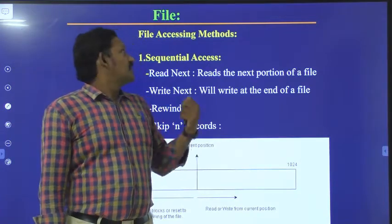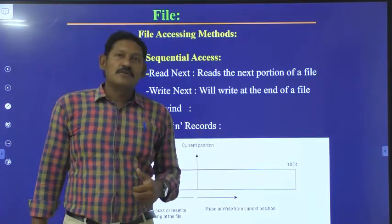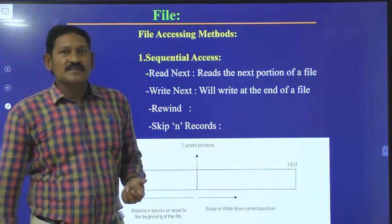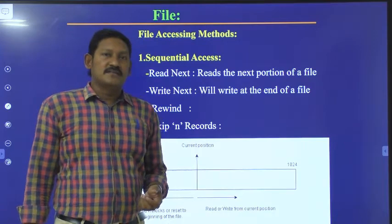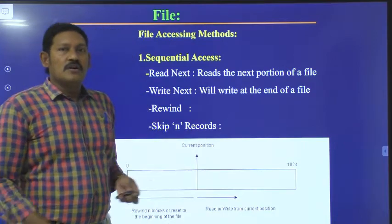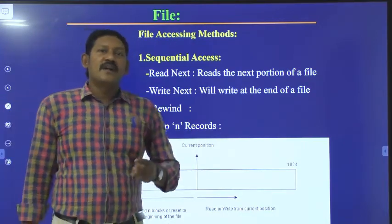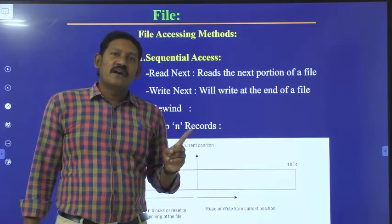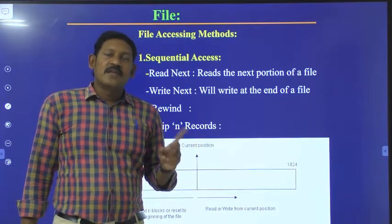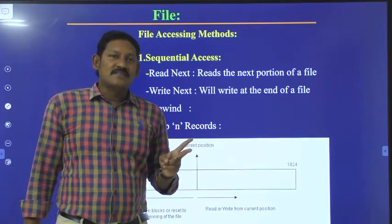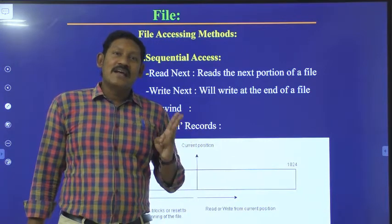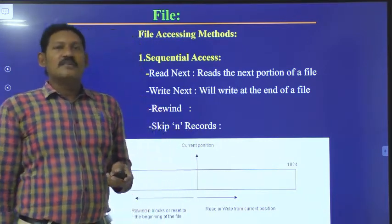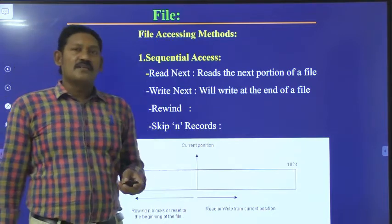Hi everyone, in this session we will discuss about file accessing methods. We have three different varieties of file accessing methods. First one is sequential file accessing, second one is random accessing, and third one is indexed sequential accessing.